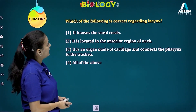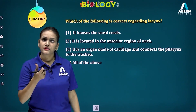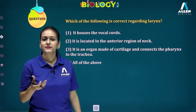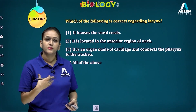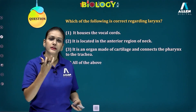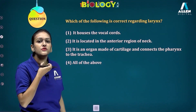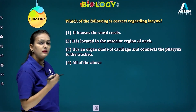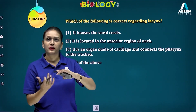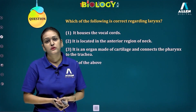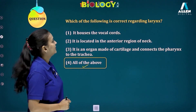Next question: which of the following is correct regarding larynx? Statement one: it houses vocal cords — larynx is the sound box, vocal cords vibrate to produce sound — correct. Statement two: located in the anterior region of the neck — yes, correct. Statement three: it is an organ made of cartilage — larynx is a cartilaginous structure — correct. Statement four: it connects the pharynx to the trachea — after the pharynx comes the trachea and larynx is in the upper region of trachea — also correct. All of the above are correct, so the fourth option is the answer.